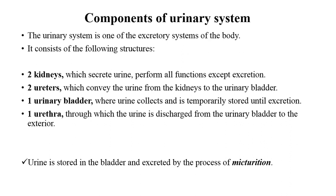Components of the urinary system: the urinary system is one of the secretory systems of the body. It consists of the following parts: two kidneys which secrete urine and perform all the functions; two ureters, one from each kidney, which convey urine from the kidney to the urinary bladder; the urinary bladder, where the urine is temporarily stored until excretion; and the urethra, through which urine is discharged from the urinary bladder to the outside. The process by which urine is secreted from the body is also known as micturition.